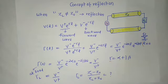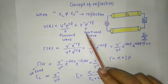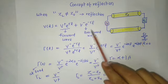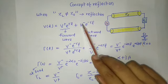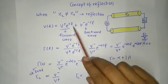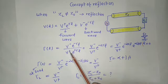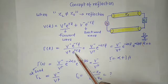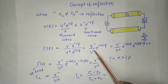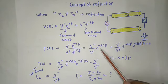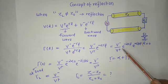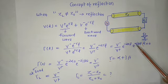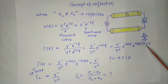The reflection coefficient is the ratio of the reflected wave (backward wave) to the incident wave. Solving this: Gamma(l) = [V- / V+] × e^(γl) × e^(-γl) = [V- / V+] × e^(-2γl). Substituting gamma = alpha + j*beta gives: Gamma(l) = [V- / V+] × e^(-2αl) × e^(-2jβl).